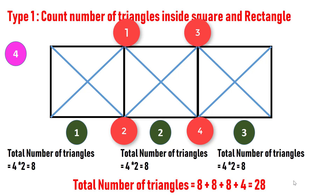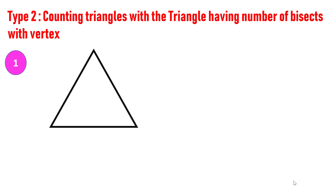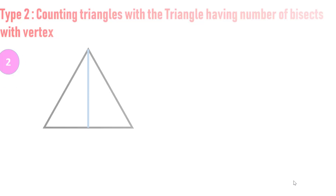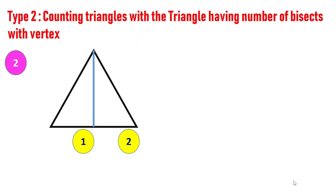So that's all in type one. Let's move on to type two. In type two, let's understand how to count the number of triangles with a triangle having bisects from vertex. In this figure there is only one triangle with no doubt. In the next figure, if you count triangles manually you will get three, but this is not the right way because when the figure becomes complex, counting manually will not help.